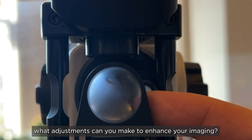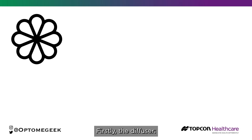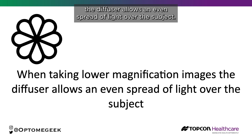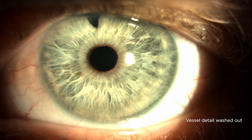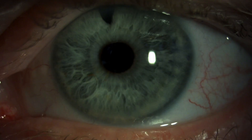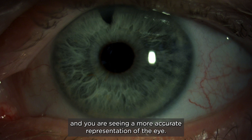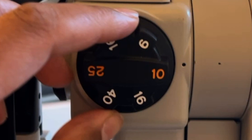Now you know the basics, what adjustments can you make to enhance your imaging? Firstly, the diffuser. When taking lower magnification images, the diffuser allows an even spread of light over the subject. This is an example of an eye with no diffuser, and this is it with the diffuser in place. Note that the object is less washed out with bright reflections, and you are seeing a more accurate representation of the eye.